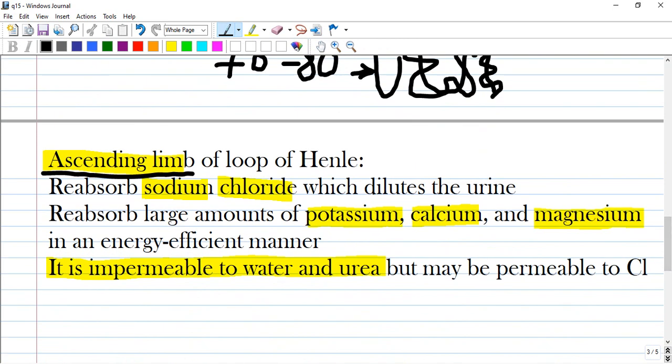But it is impermeable to water and urea in this portion of the loop. It also reabsorbs large amounts of potassium, calcium, and magnesium in an energy-efficient manner.